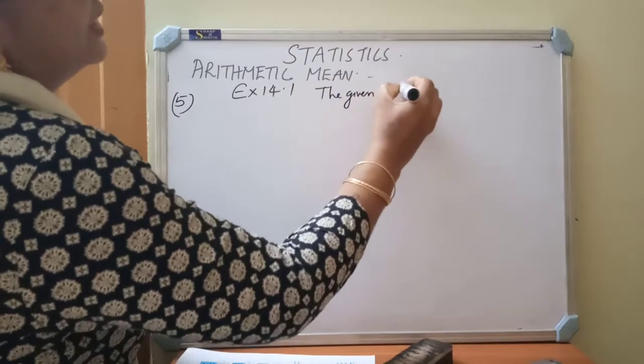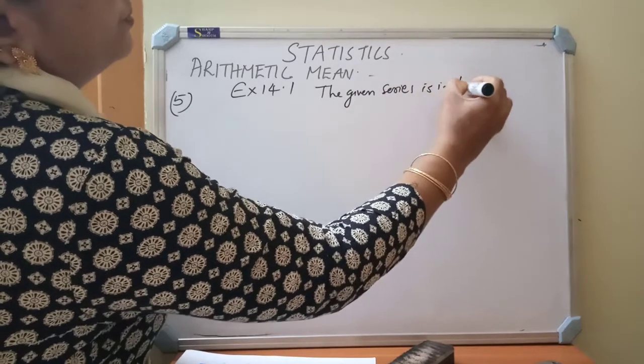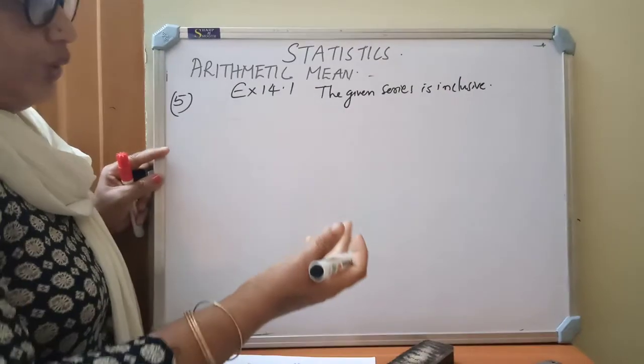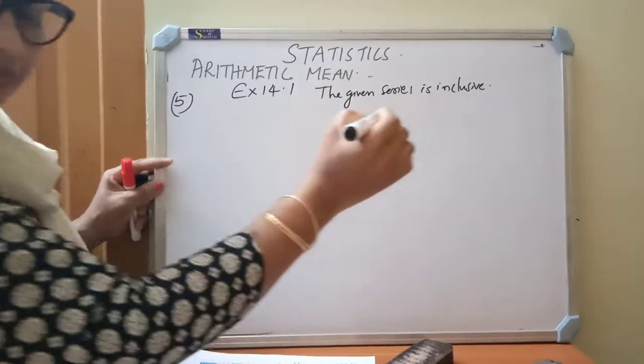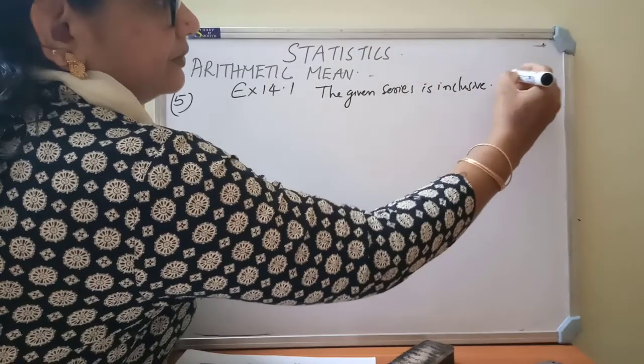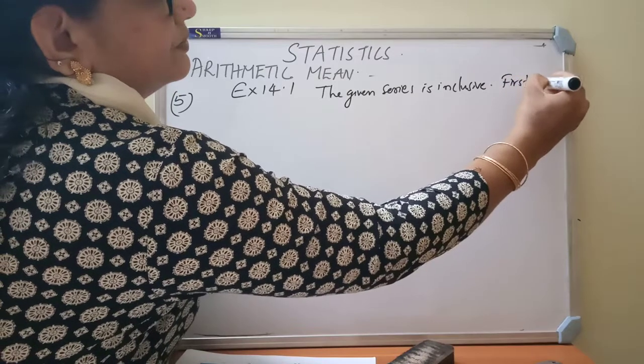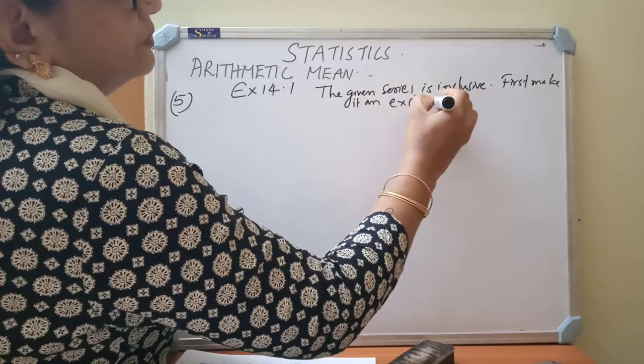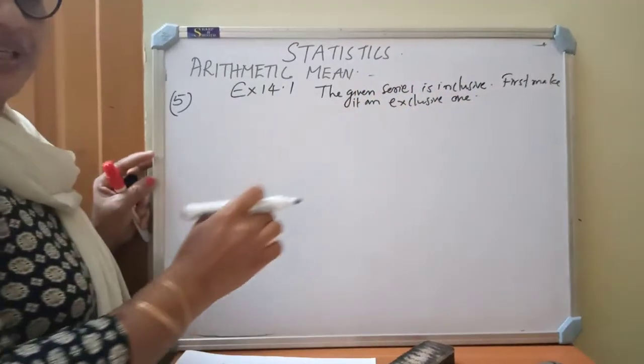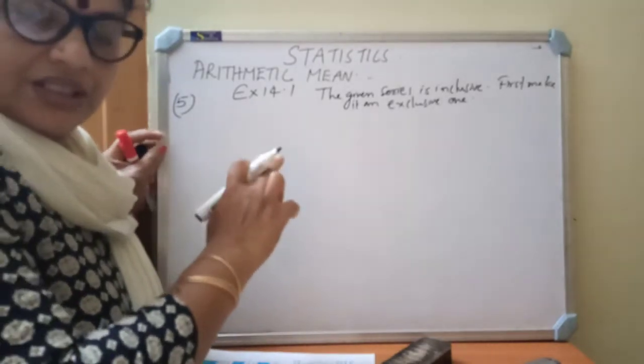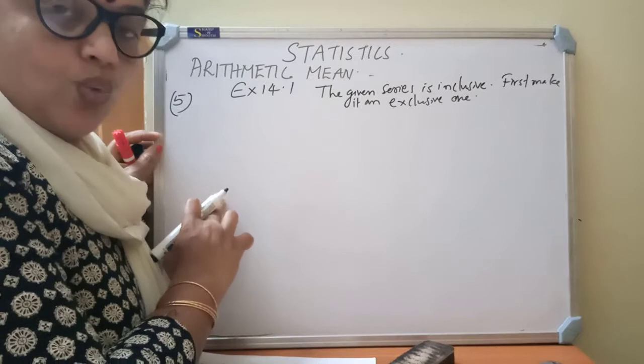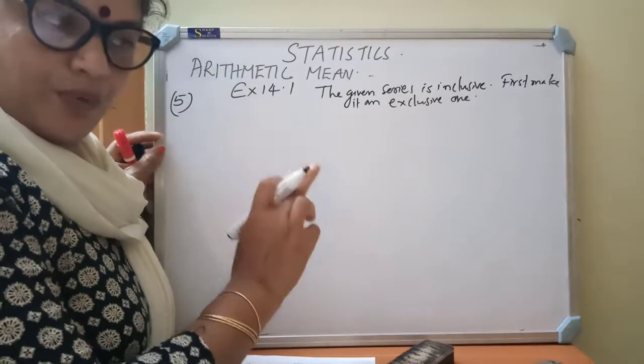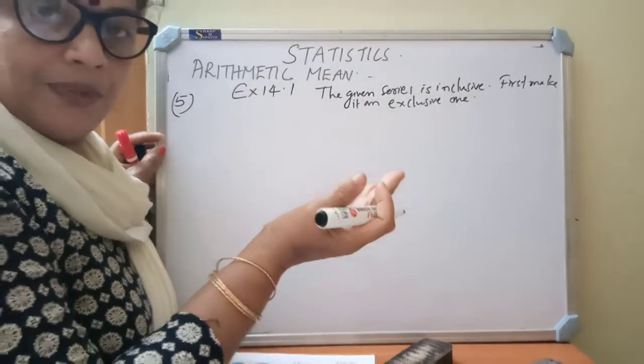The given series is inclusive. First what we have to do? We have to make it an exclusive one. In last year we studied if the class intervals are upper limit of the first class is not equal to the lower limit of the second class. What is the rule given to you? Lower limit minus 0.5 and upper limit plus 0.5.